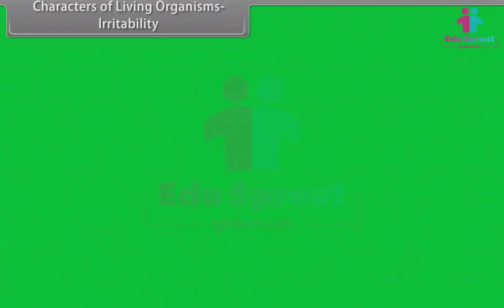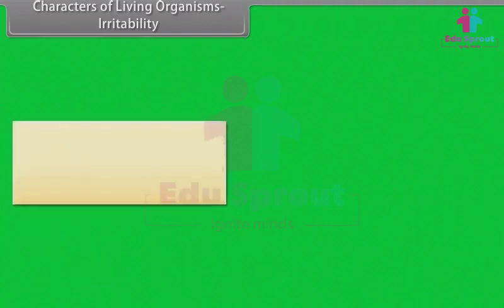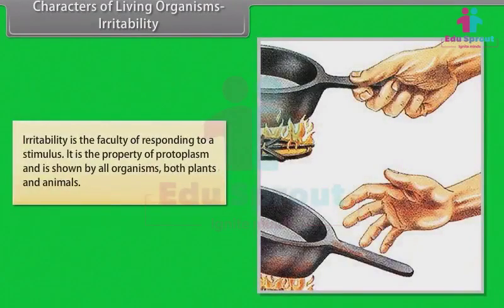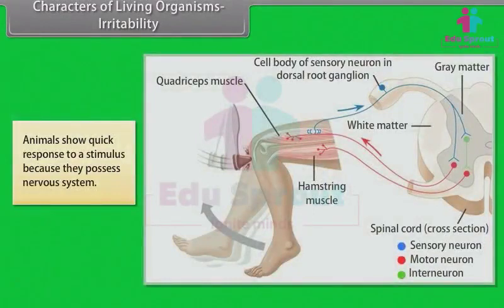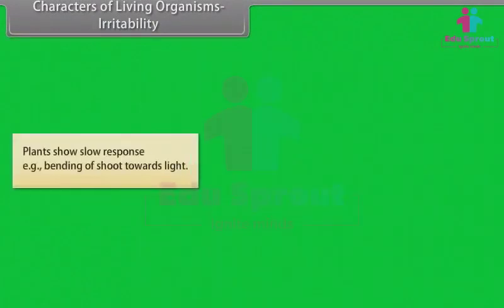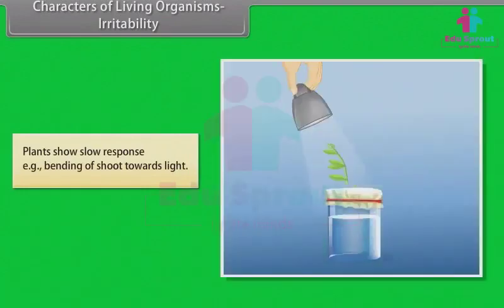Irritability is the faculty of responding to a stimulus. It is the property of protoplasm and is shown by all organisms, both plants and animals. Animals show quick response to a stimulus because they possess a nervous system. Plants show slow response, for example, bending of shoot towards light.